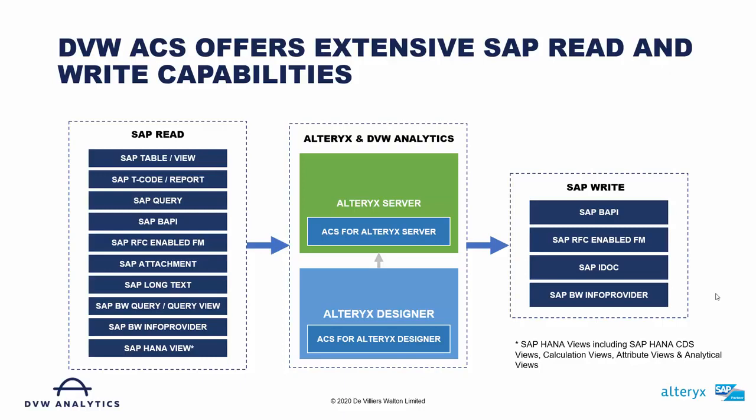On the read side, we have the ability to extract data from SAP tables and table views. If you use SAP today, the data browser types of transactions — SE16, SE16N, or some Z variant — our capability around tables and table views is analogous to using that particular transaction code within an SAP system. We also support the ability to extract data directly from transaction codes or T-codes, as well as ABAP reports into Altrix.